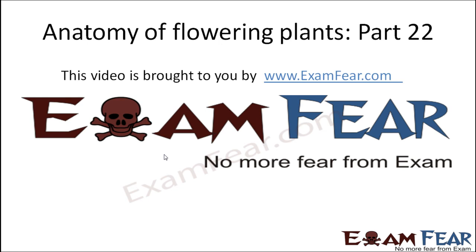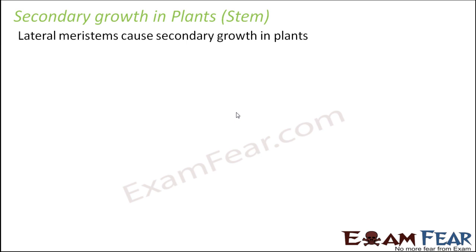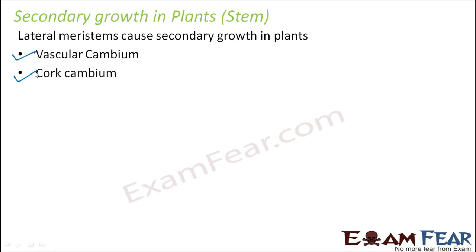Hello friends, this video on anatomy of flowering plants part 22 is brought to you by examfear.com — no more fear from exam. Here we will concentrate on secondary growth, which happens because of the lateral meristem, which is nothing but cambium. This cambium is of two types: vascular cambium and cork cambium. Both of them cause secondary growth, and we will discuss each type one by one.